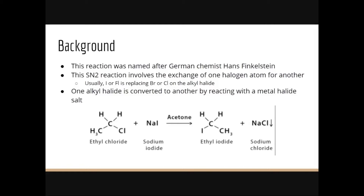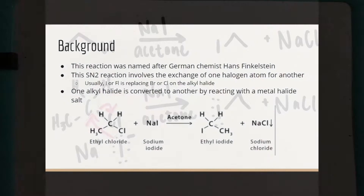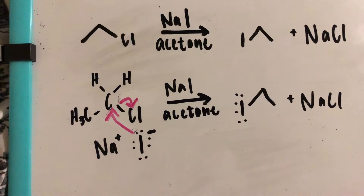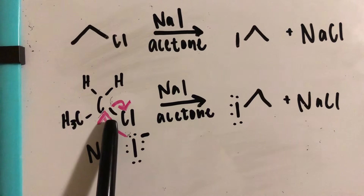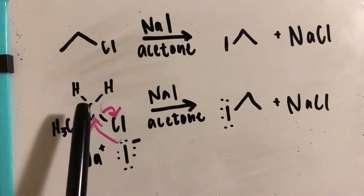This is an example of a Finkelstein reaction where chlorine is getting replaced by iodine on the alkyl halide. What I have drawn here is the mechanism: the bond with the chlorine is breaking and that bond is going back onto the chlorine, adding an electron pair to the chlorine, while the pair of electrons on the iodine is attacking that carbon.